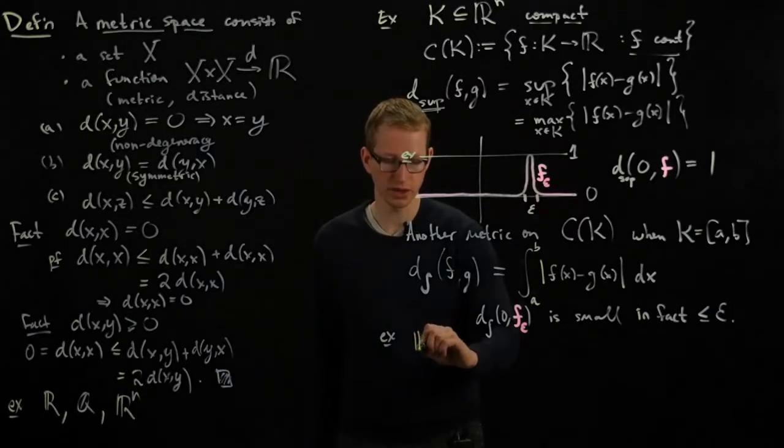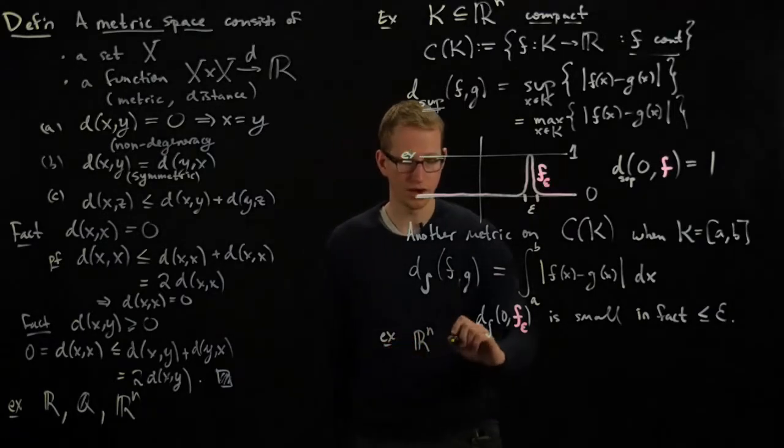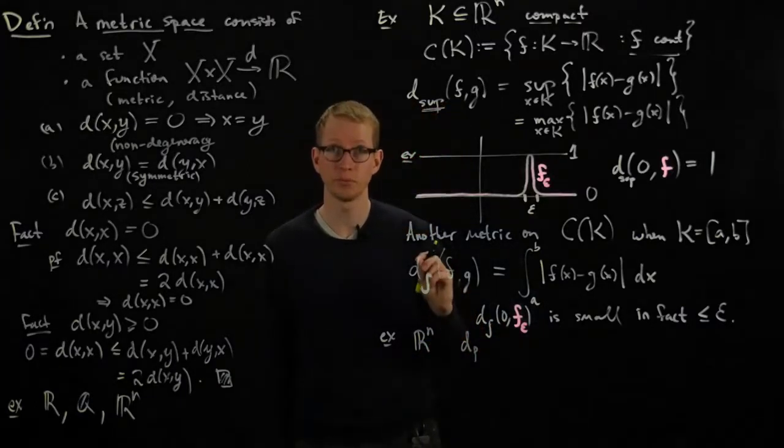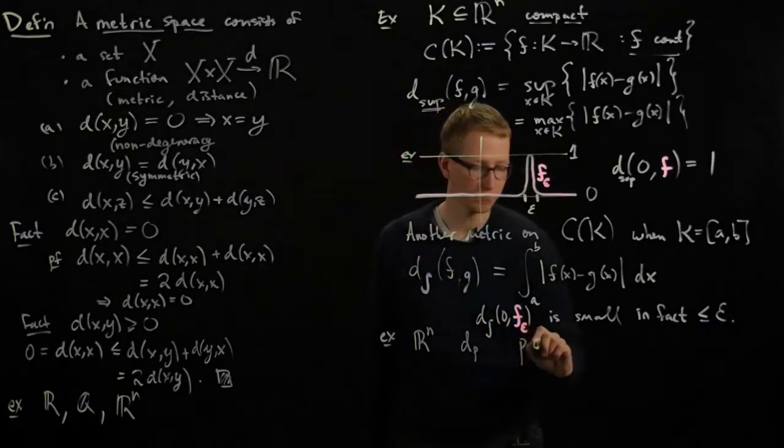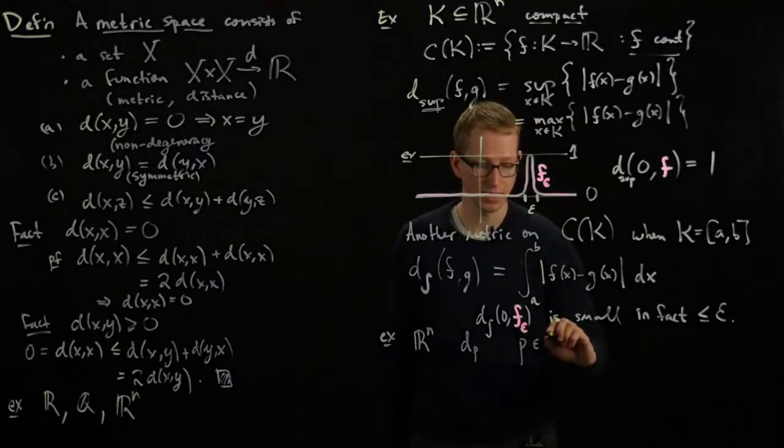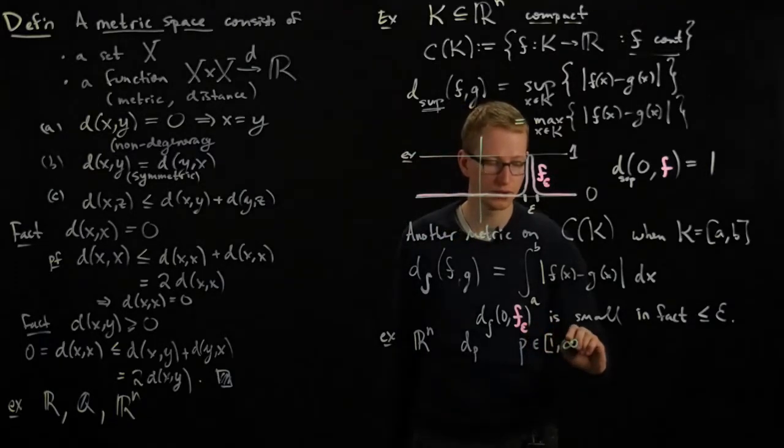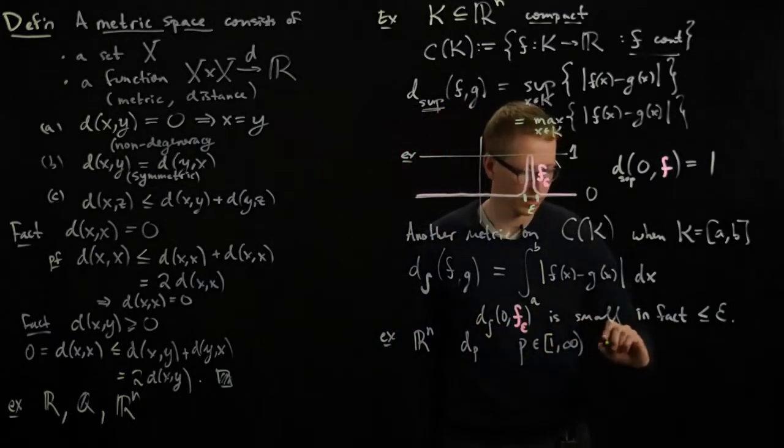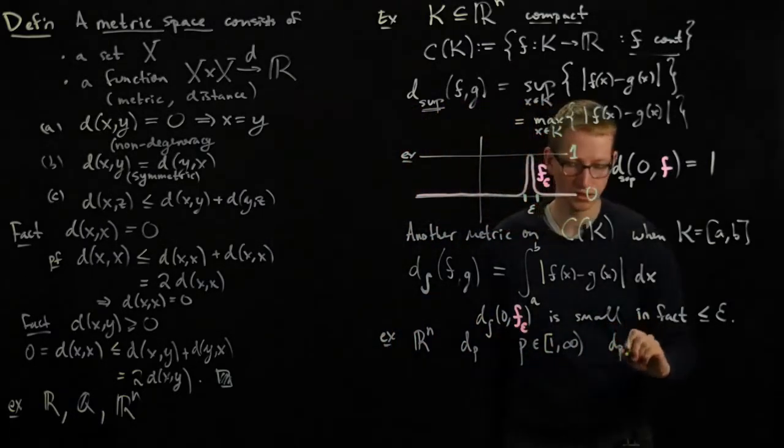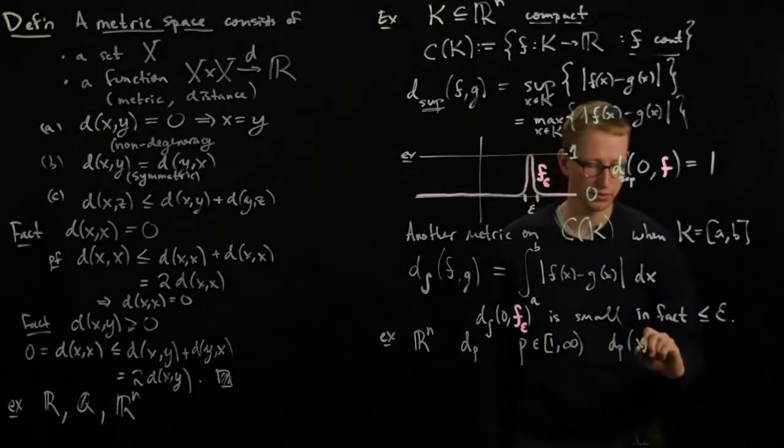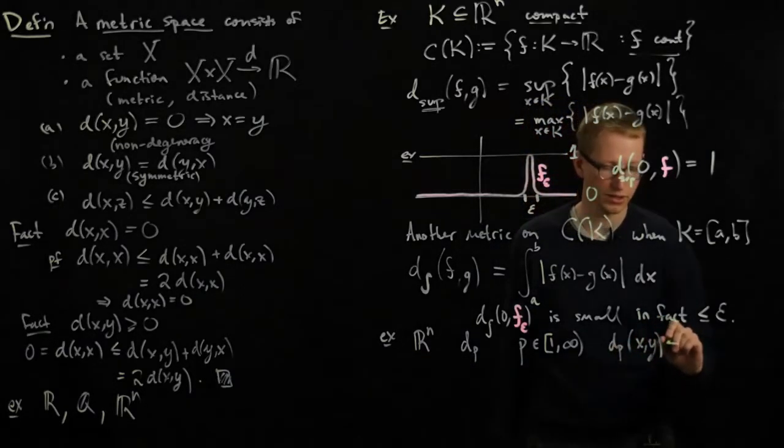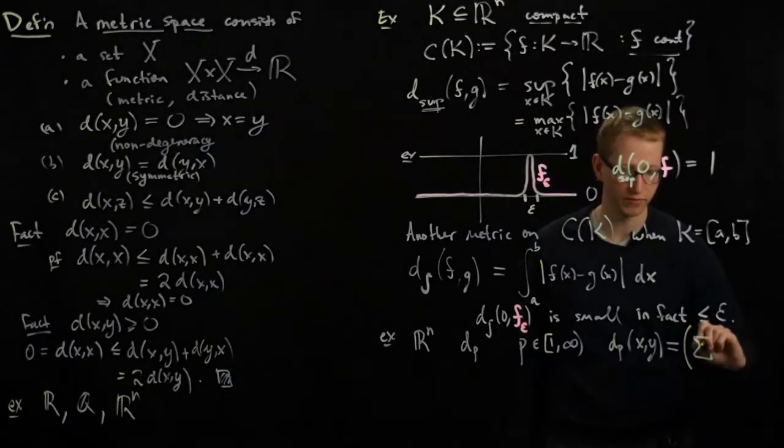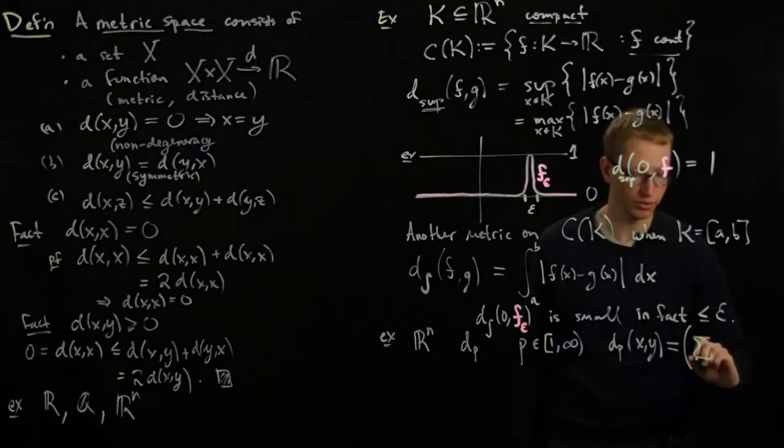So let's look at R^n, and R^n will equip with a metric which we denote by d subscript p, where p for the time being is any number from 1 to and not including infinity. And we define d_p to be the distance between X and Y to actually be equal to—this seems like a complicated formula but it reduces to things that we're quite familiar with.